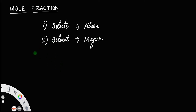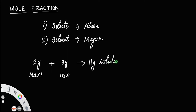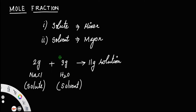For example, if I take 2 grams of sodium chloride and mix it with 9 grams of water to make 11 grams of a solution, then definitely this 2 gram is the minor component which constitutes our solute. So sodium chloride is the solute here and the major component, that is 9 grams, constitutes the solvent. In every solution, you have to figure out which one is the solute and which one is the solvent.